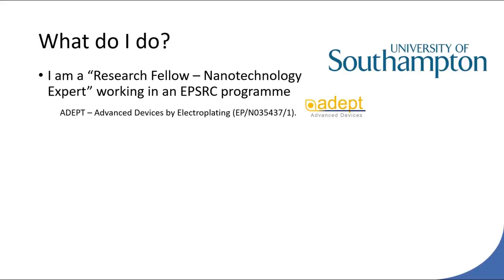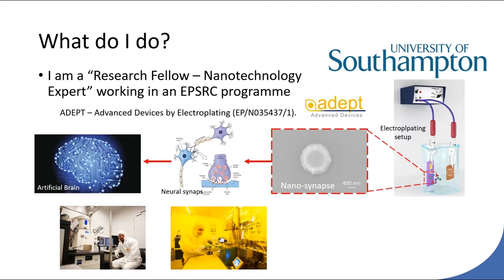I'm currently a research fellow in the Electronics and Computer Science department at Southampton. I make nano-sized materials to form what we call memristors. A memristor works as a synapse, and a synapse is basically the structure that transmits electrical signals between neurons. So if we connect many memristors on a chip in a network, we can create an artificial brain. I spend most of my time fabricating the memristors, but I also spare some time modeling memristor circuits.